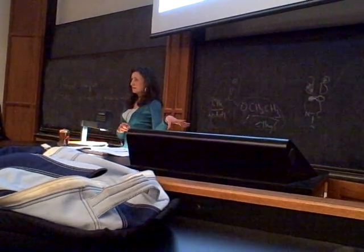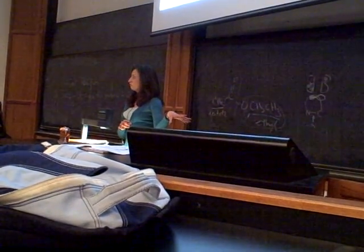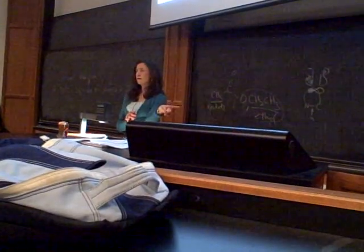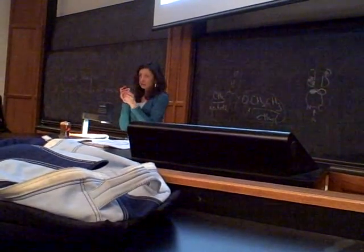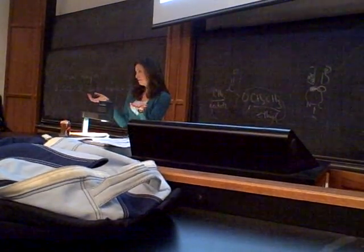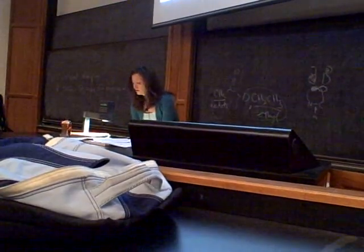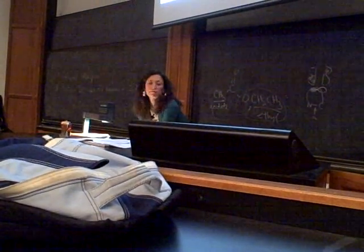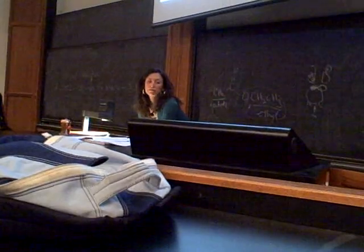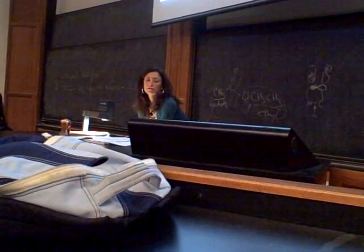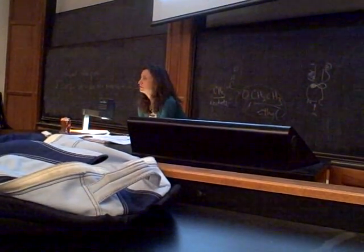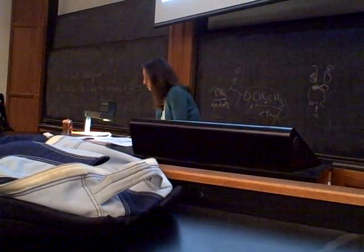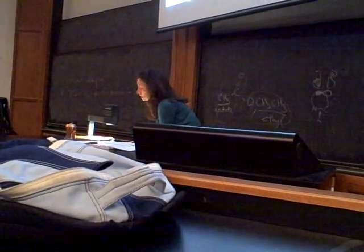I was just looking at our data set for height of women, and I saw that the average height in our class is 5'5". So instead of 5'5", right in the middle would be zero. That means zero standard deviations above or below average. 5'5" is right at the average, so that translates into zero.